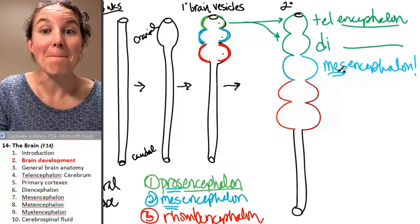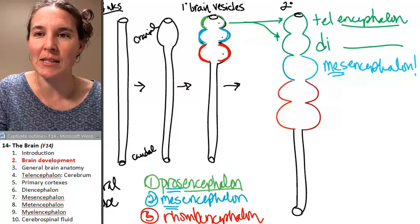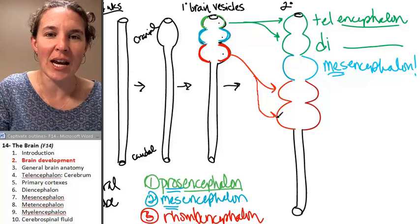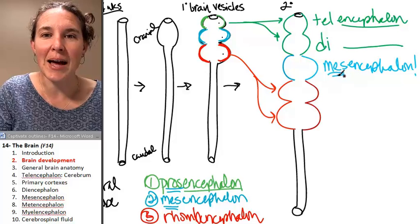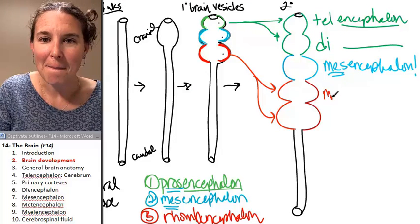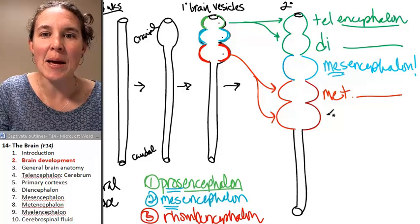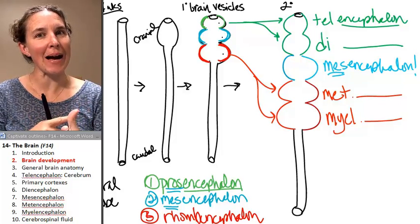Teal, di, knees. And then my rhombencephalon, I was about to finish my little chant. My rhombencephalon becomes teal, di, knees, metencephalon, and myelencephalon. Teal, di, knees, met, mile.